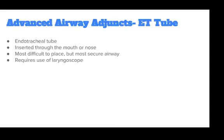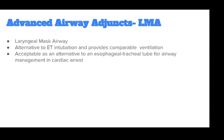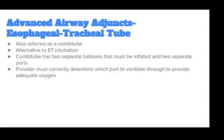An endotracheal tube is inserted through the mouth or nose. It is the most difficult airway to place, but also the most secure. Only experienced providers should perform ET intubation, and it requires the use of a laryngoscope. Fiber-optic portable laryngoscopes have a video screen and improved success, and are gaining popularity for field use. The laryngeal mask airway is an alternative to the ET tube, inflated through two separate ports. The provider must correctly determine which port to ventilate through to provide adequate oxygenation.